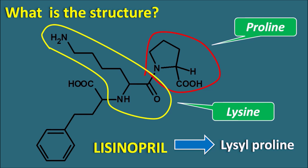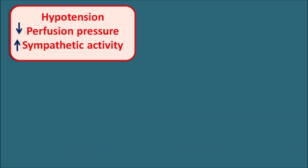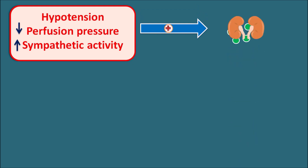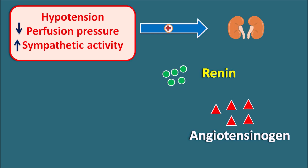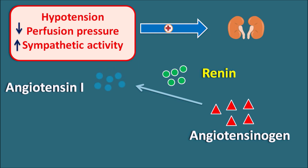Now let us see the mechanism of Lisinopril. In conditions like hypotension — reduced blood pressure as in shock conditions — or decreased perfusion pressure due to vasodilatory response, reduced renal functionality, or excessive sympathetic stimulation, all these can stimulate the kidney. From the kidney, the important mediator released is renin, which is responsible for the activation of the renin-angiotensin-aldosterone system. This mediator acts on the precursor angiotensinogen, converting it into angiotensin 1.